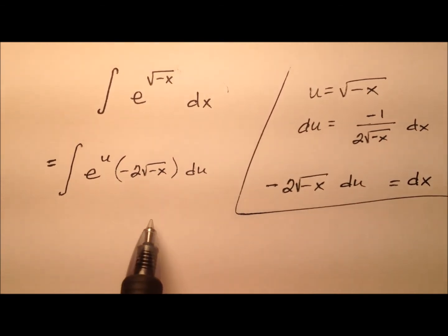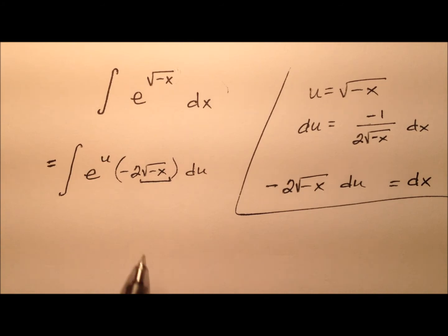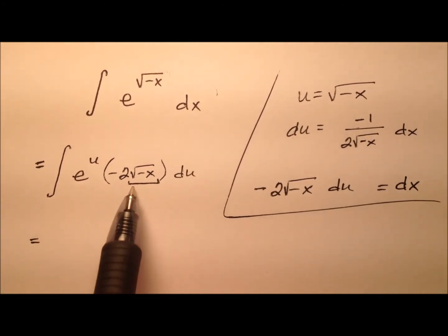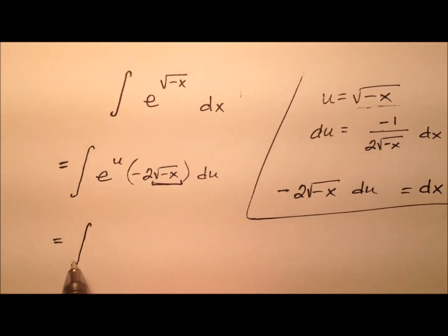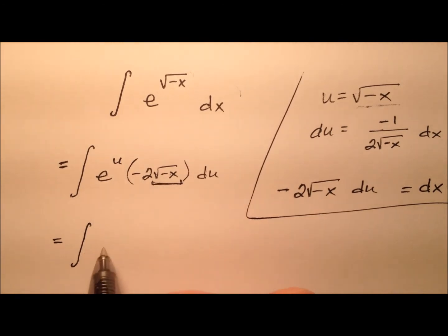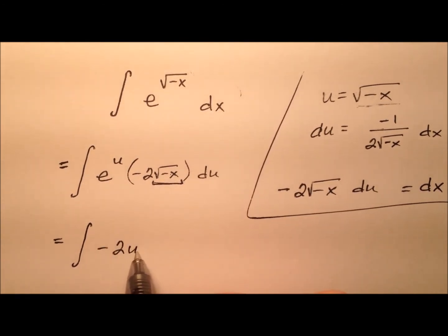Well, we have a little bit of a problem here. We still have an x here, even though we're trying to put things in terms of u. But actually, this is a very minor problem because the square root of negative x was in fact our u. So let's go ahead and make this. It'll be a negative 2u times e to the u du.